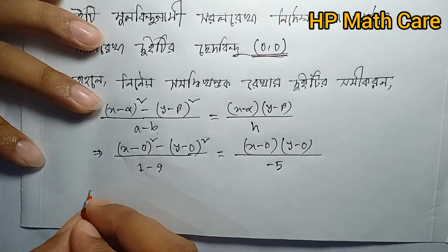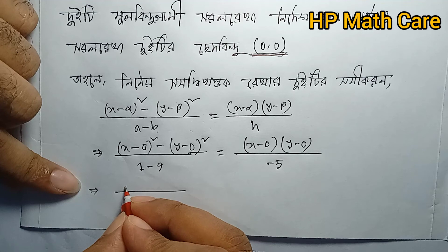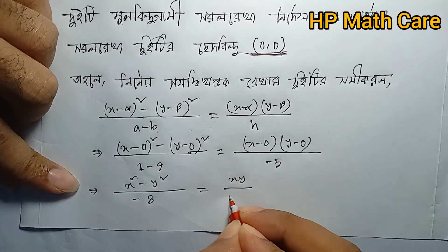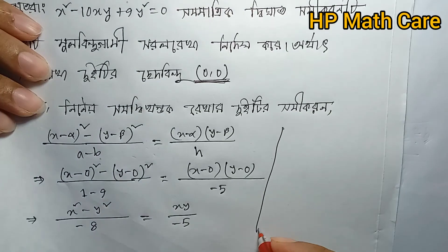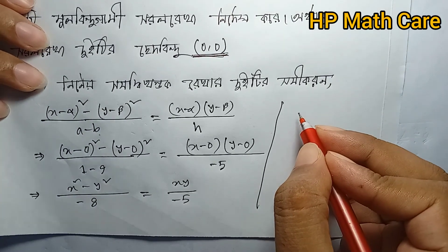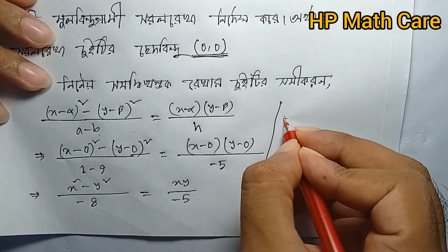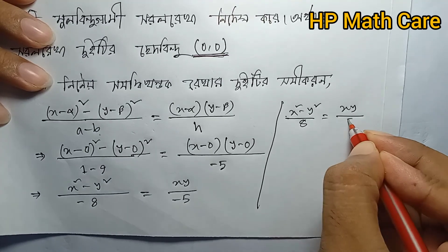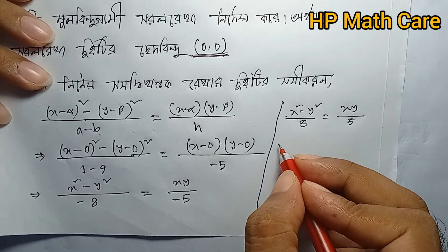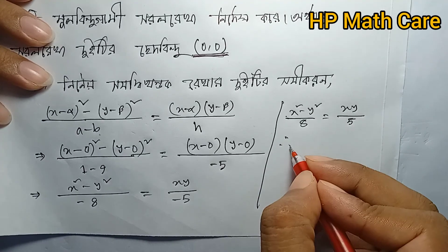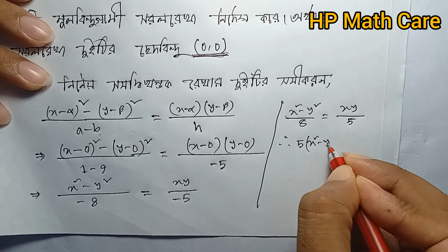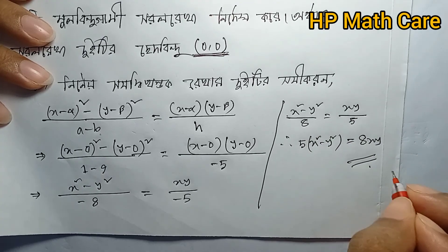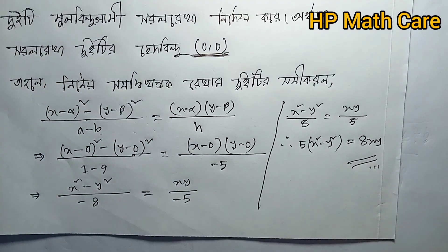So we have X squared minus Y squared divided by a minus b, and then XY divided by some coefficient. Substituting: 1 minus 9 equals minus 8, giving us x squared minus y squared over minus 8 and XY over the appropriate value, with the constant equal to minus 5.